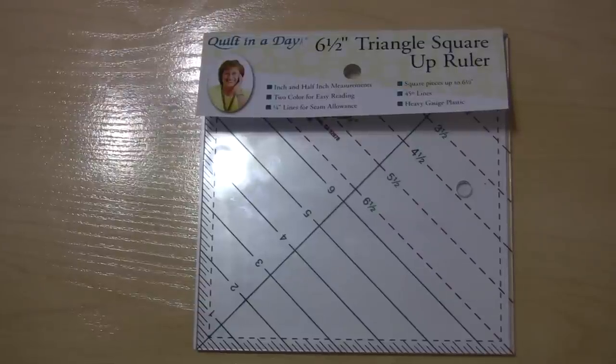Welcome to SewVeryEasy, my name is Laura, and today I've got my block in the mail for a Block of the Month program that I'm doing with Quilting Confections, and it is a pinwheel block. I'm going to be making that pinwheel block today and I'm going to be using the Eleanor Burns 6½ inch square-up ruler. So we're going to cover that and we're also going to cover the block.